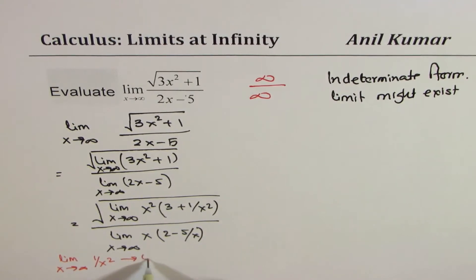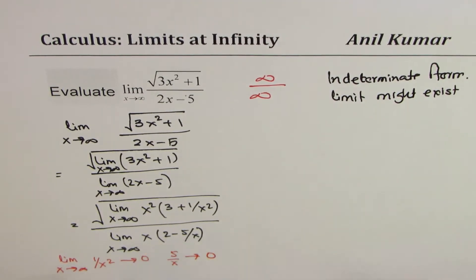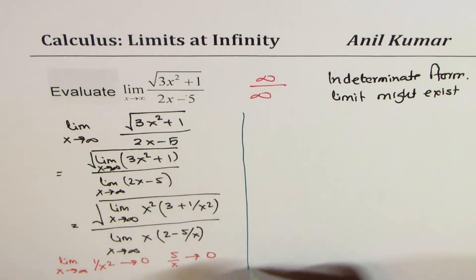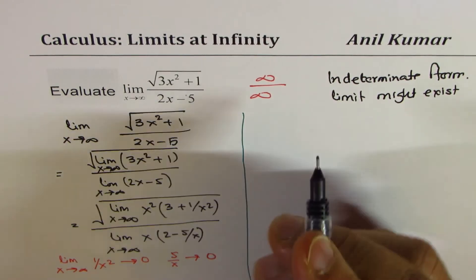As x approaches an infinitely large value, 1/x squared approaches 0 and 5/x also approaches 0 — dividing by an infinitely large value gives 0. That simplifies the question. So we use that strategy and continue.